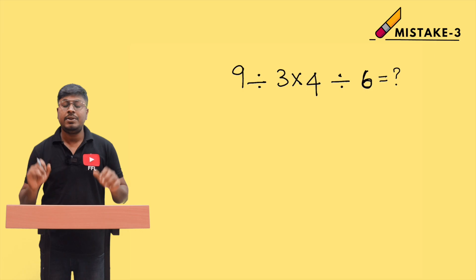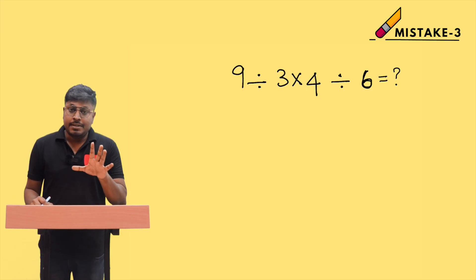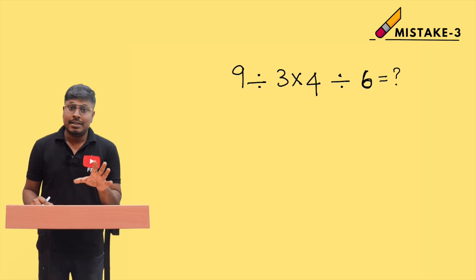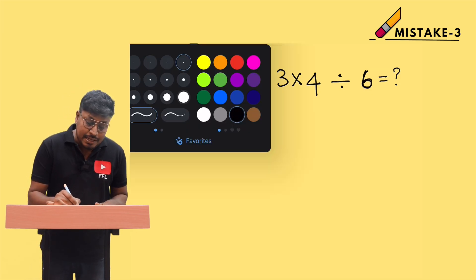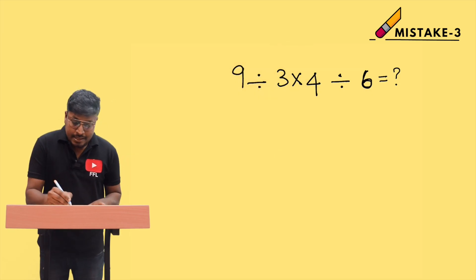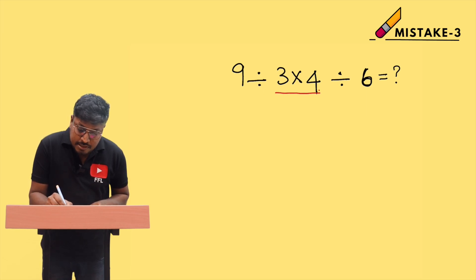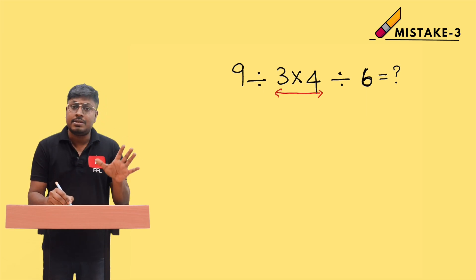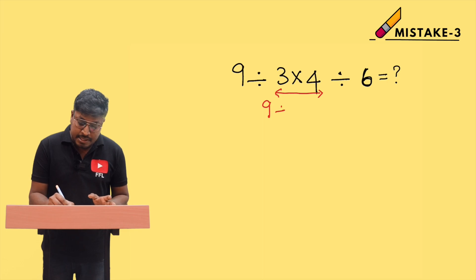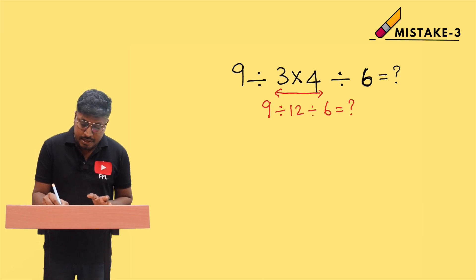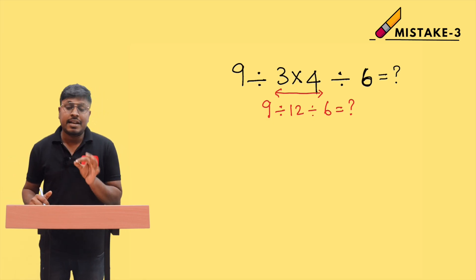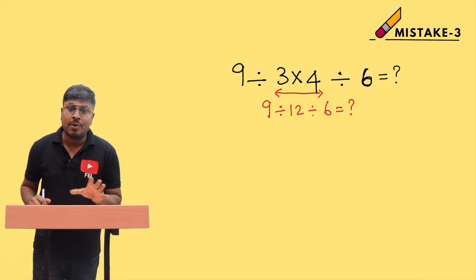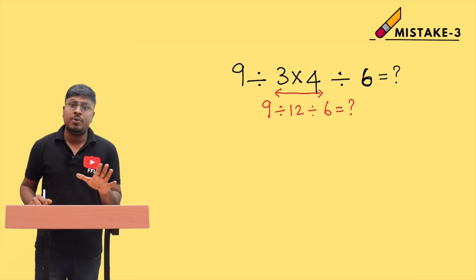The most common mistake students make at the beginning is that instead of dividing first, they multiply 4 × 3 first, rewriting the question as 9 ÷ 12 ÷ 6 = ? and then try to solve from there. I have seen many students make this mistake. This is exactly the wrong way to solve the question.